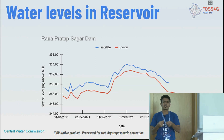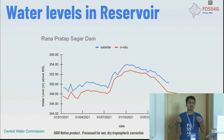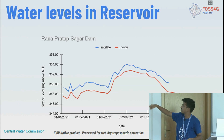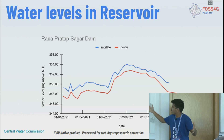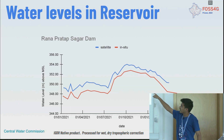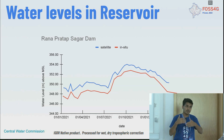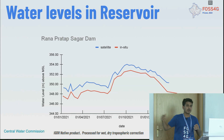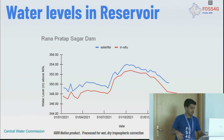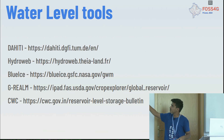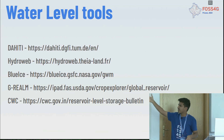Once you have the data, you perform some pre-processing, which includes dry atmospheric correction and wet atmospheric correction, and then you identify the water levels. In this example I have taken data from 2021 to 2022 — the blue line is the satellite-derived levels and the red line is the in-situ measurement. The difference is noticeable, but if you add more corrections you can remove that bias. You can also use existing tools developed by many agencies to explore this.